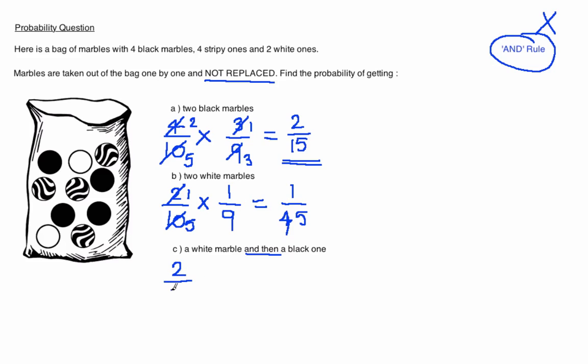Now once one of the white ones are taken out there are 9 marbles left altogether but still there are 4 black marbles in the bag. So here it is 4 out of 9 for the probability of choosing a black one second.